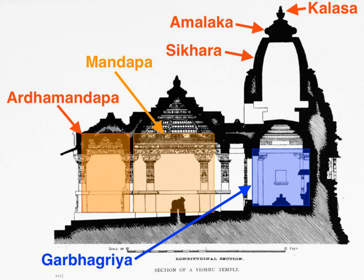Notable examples of Southeast Asian Hindu temple architecture are the Shaivite Prambanan Trimurti temple compound in Java, Indonesia, 9th century, and the Vishnavite Angkor Wat in Cambodia, 12th century.